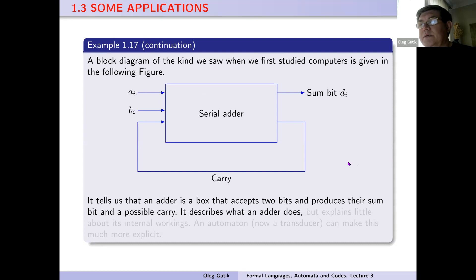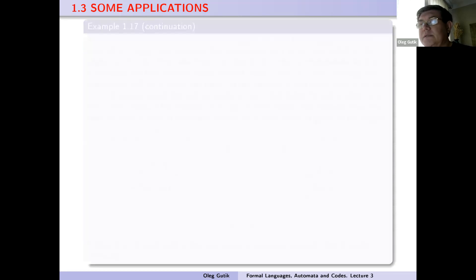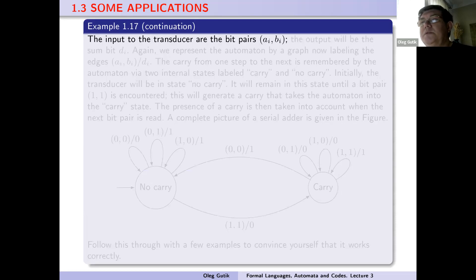It tells us that an adder is a box that accepts two bits and produces a sum bit and a possible carry. It describes what an adder does, but explains little about its internal workings. A pattern now, an automaton, can make this much more explicit.